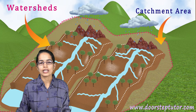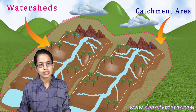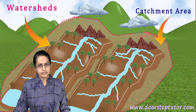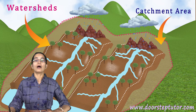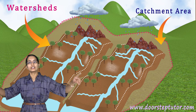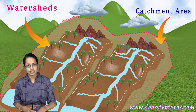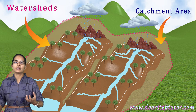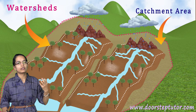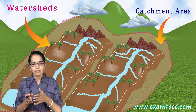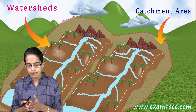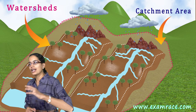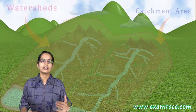Catchment area talks about bigger rivers — the areas drained by the bigger rivers. When I talk about smaller rivers, we usually focus on watersheds, where you have a boundary that separates two small streams.